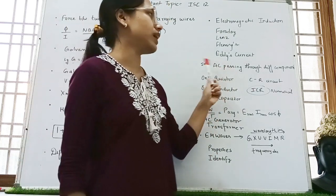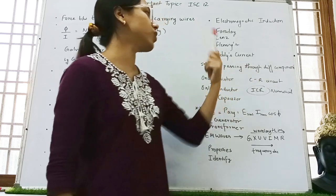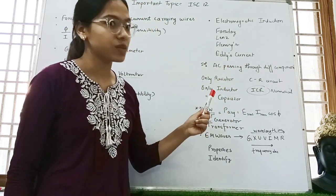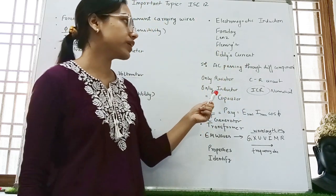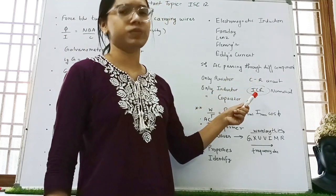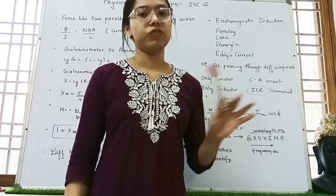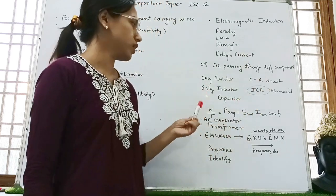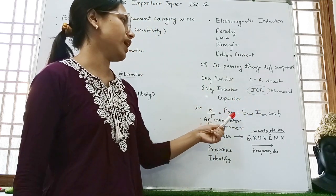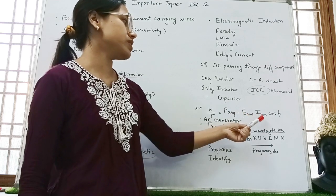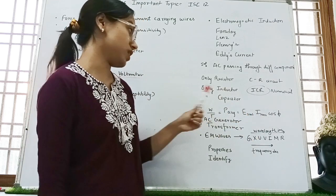Then AC, that is alternating current passing through different components. When there is only resistor provided, only capacitor, only inductor. They may ask you LCR circuit. The numericals are asked mostly on this LCR. But you have to prepare for all of them. W by T is equal to P average equals to ERMS IRMS cos phi. This is the another formula.